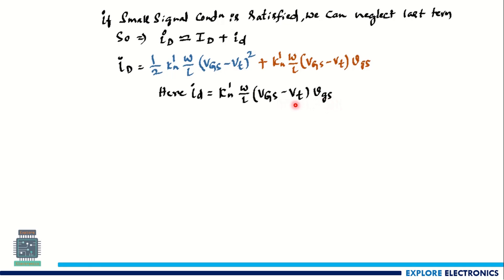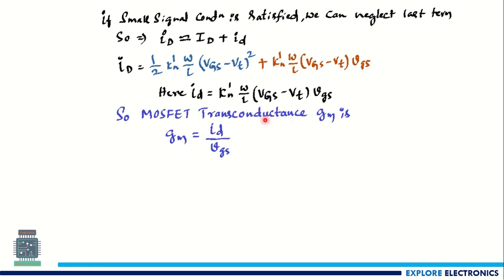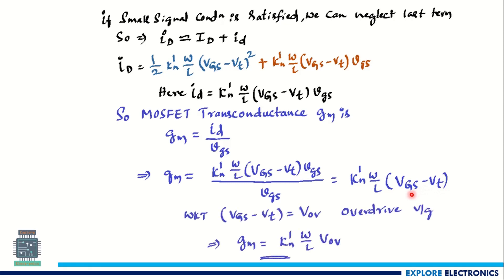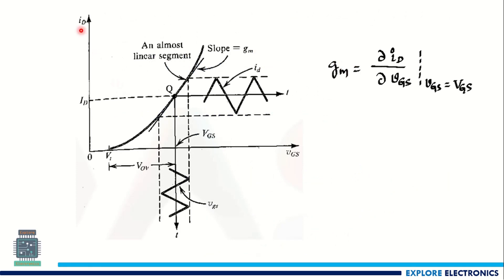The next important parameter is transconductance gm. It is defined as gm = id / vgs — the small signal drain current divided by the small signal gate-to-source voltage. Substituting the expression for id and cancelling vgs terms, we get gm = k'n·(W/L)·(VGS − VT). Since (VGS − VT) is the overdrive voltage VOV, the final expression is gm = k'n·(W/L)·VOV.